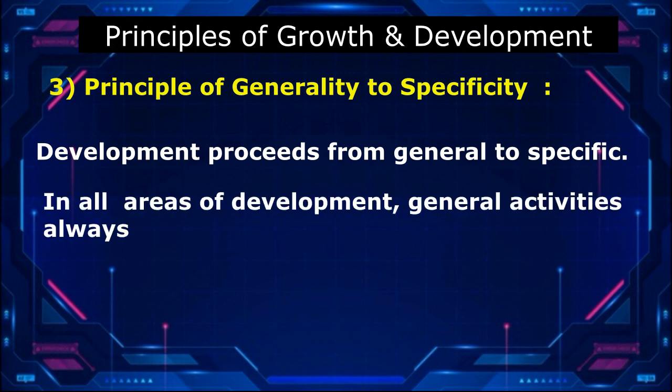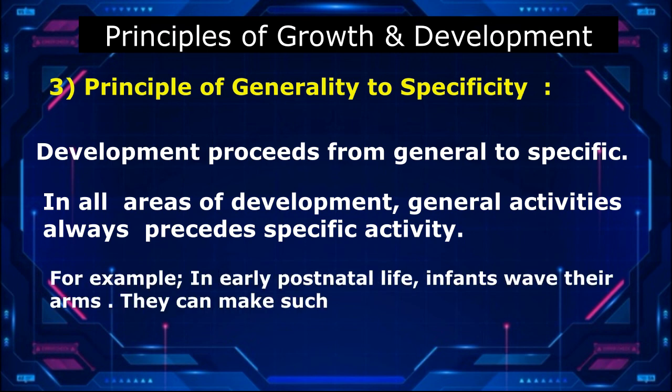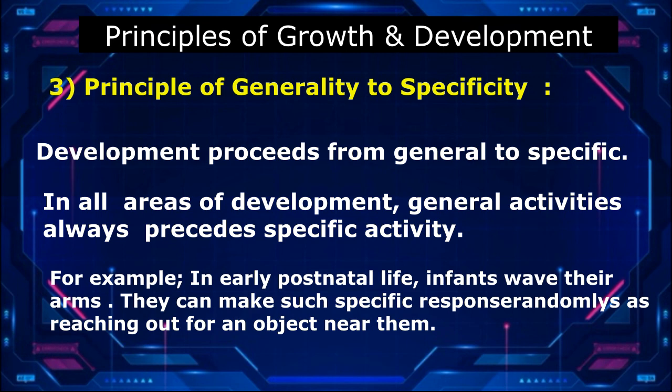3. Principle of Generality to Specificity: Development proceeds from general to specific in all areas of development. General activities always precede specific activity. For example, in early postnatal life, infants wave their arms randomly before they can make specific responses such as reaching out for an object near them.